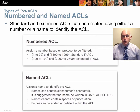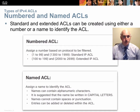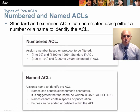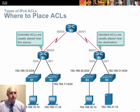With named ACLs, you can delete and add individual entries without recreating the entire list. With numbered ACLs, you have to delete the entire list and recreate it to make any changes. Numbers don't convey meaning, though remark statements help. A named ACL like 'FIREWALL' makes it very obvious what it's doing.